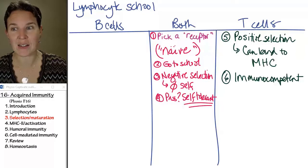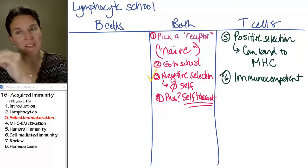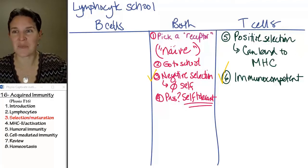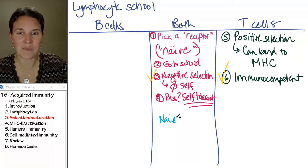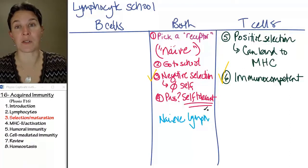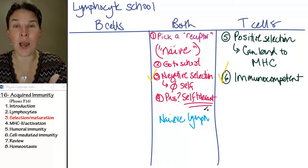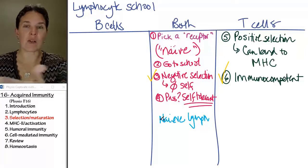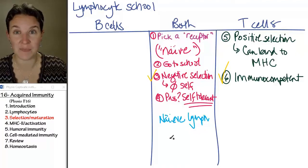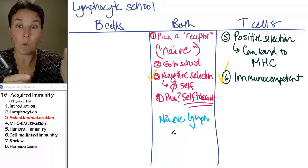If they passed negative selection, then they are self-tolerant. And if they passed positive selection, then they're immunocompetent. They're still naïve lymphocytes. However, they have functional receptors, so now they can go out and patrol. Five percent of everybody sent to school graduates and can go out and patrol the area, looking for their specific antigen. How they do that is dependent on whether they're B cells or T cells.